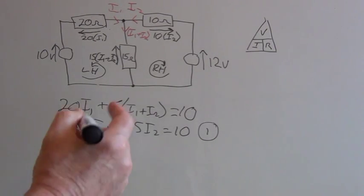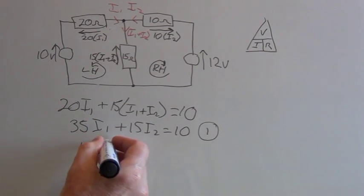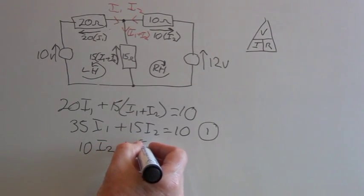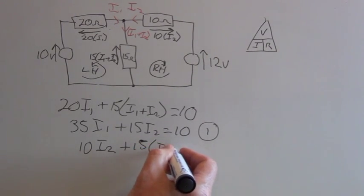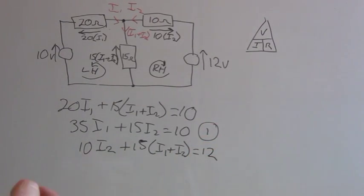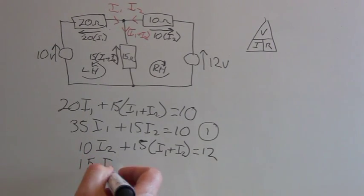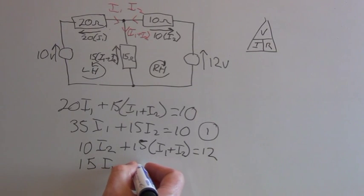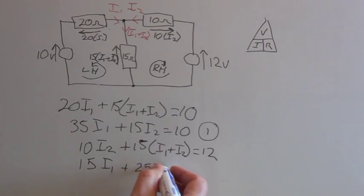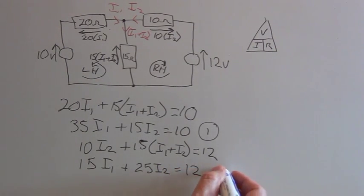Now for the right hand loop, we have 15 I1 plus 15 times I1 plus I2 equals 12. So again, multiplying out the brackets and collecting the like terms, I have 15 I1 plus 25 I2 equals 12, and I'll label that number two.